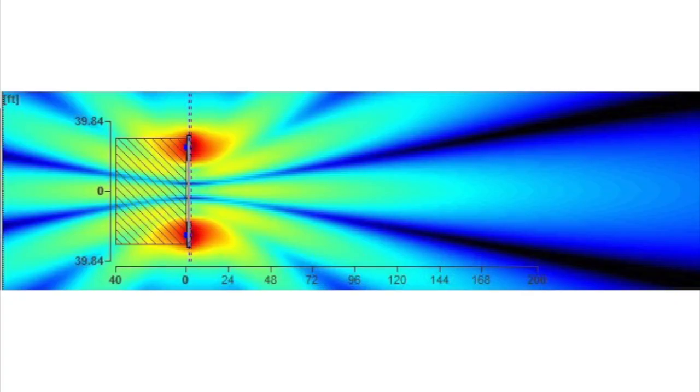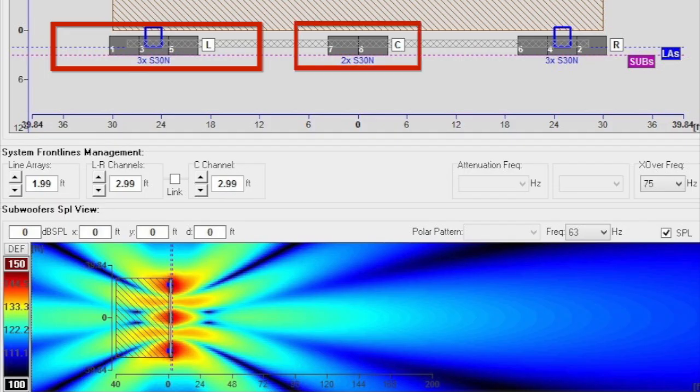So the next option that I see a lot that we all use is left-center-right, and that's usually so you can get a more consistent bass coverage across the stage. And that happens to be the second worst option that you can go with. You see, obviously,